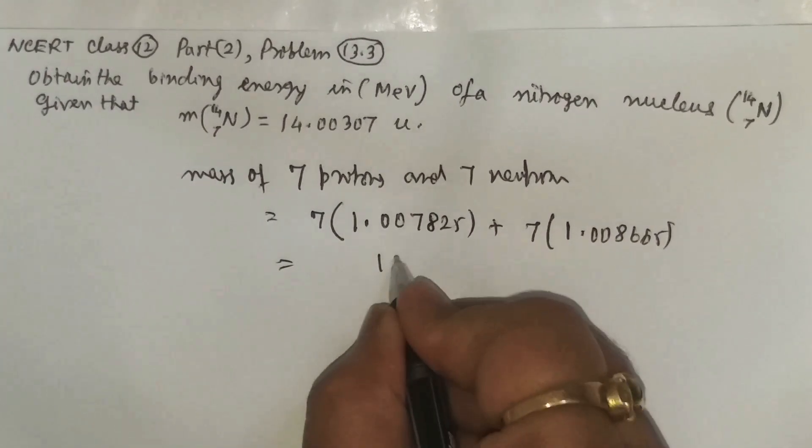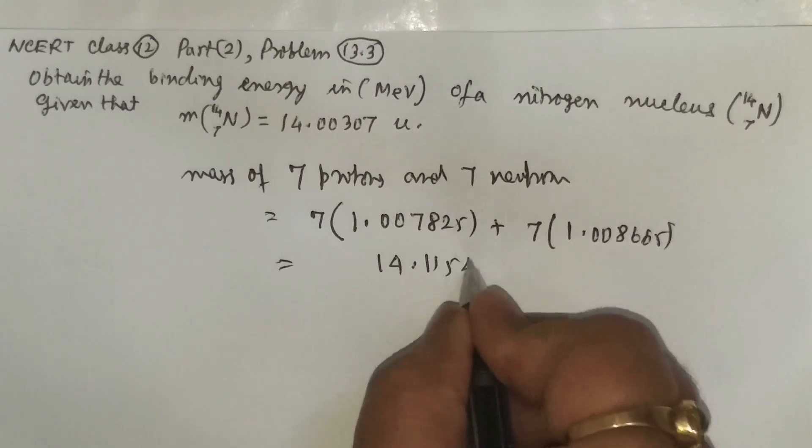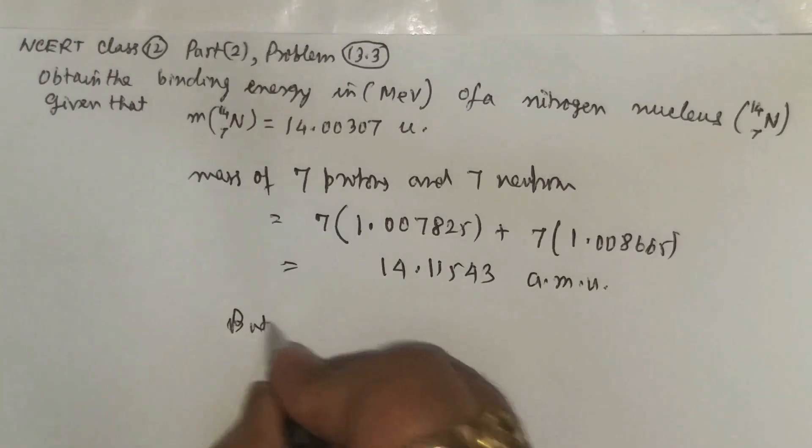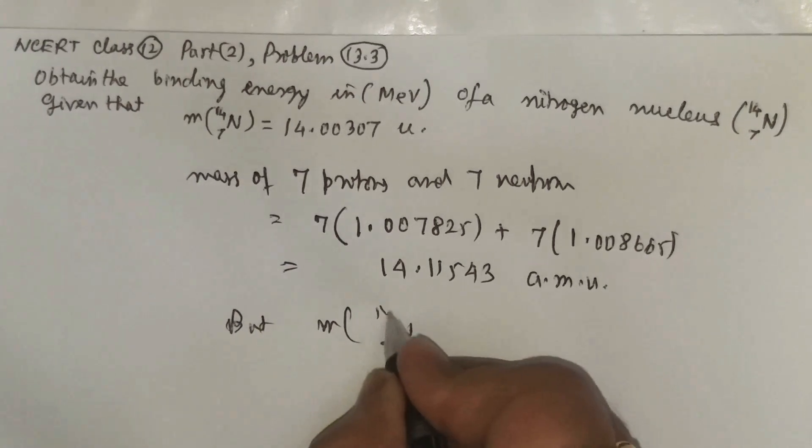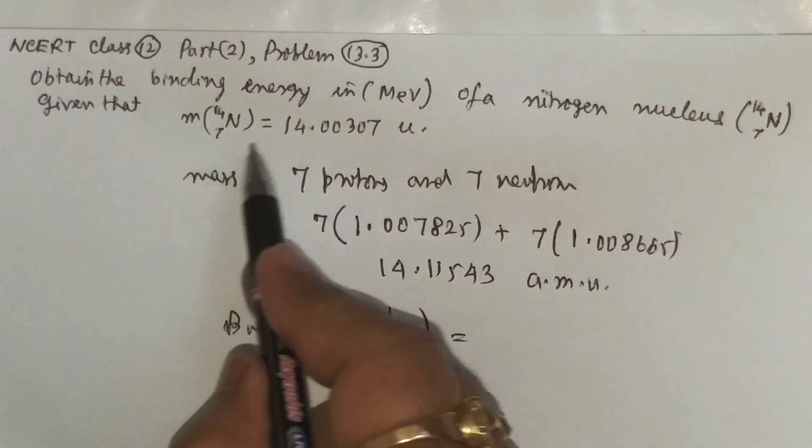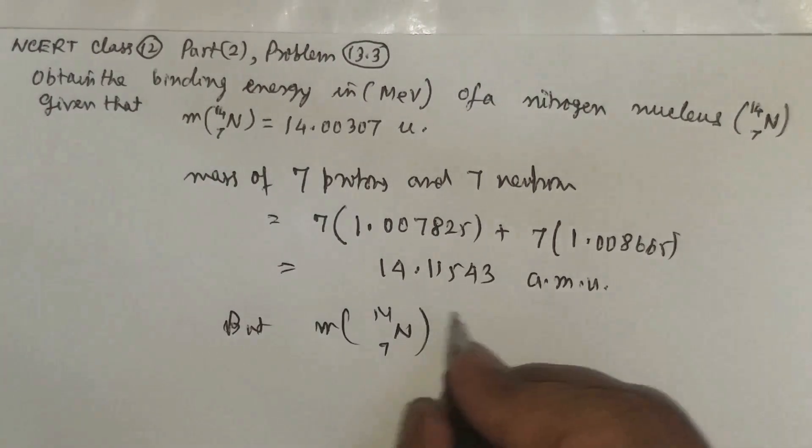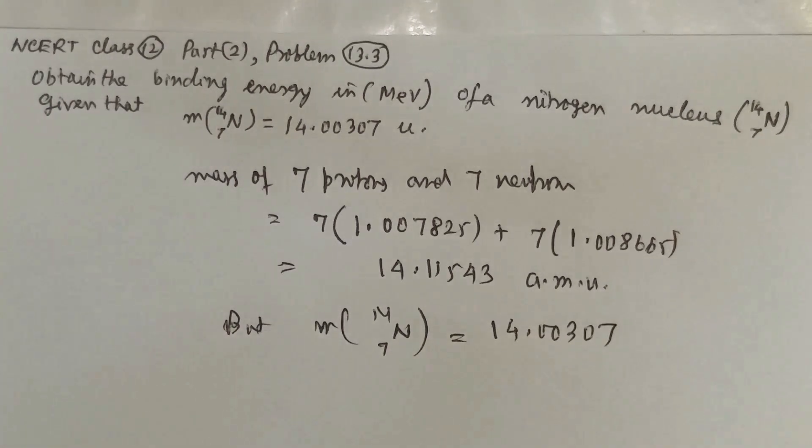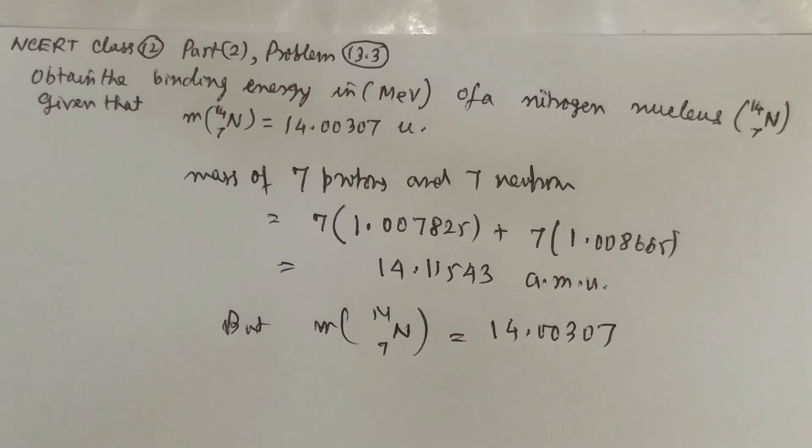When you add this you have 14.11543 atomic mass units. But the mass of nitrogen-14 isotope as given in the question, you can read the question, it is 14.00307.